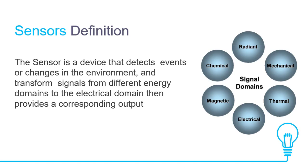We will start with the sensor definition. A sensor is a device that detects events or changes in the environment and transforms signals from different energy domains to the electrical domain, then provides a corresponding output. There are various signal domains: mechanical, thermal, electrical, magnetic, chemical, and radiant.